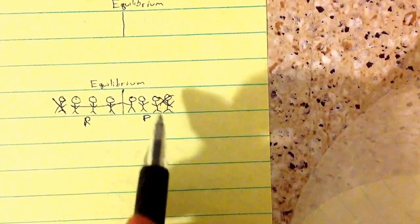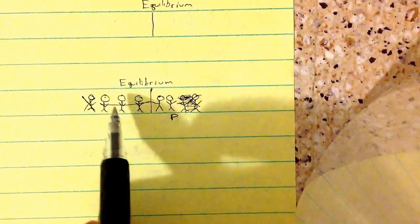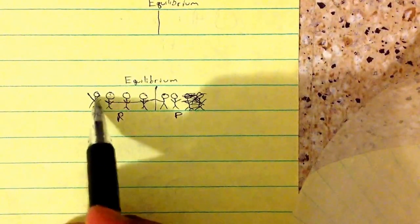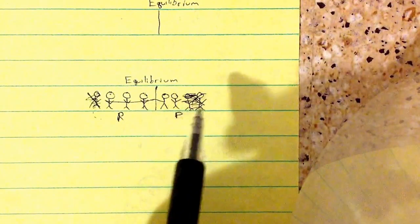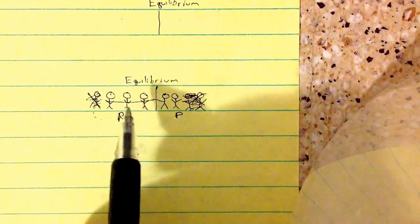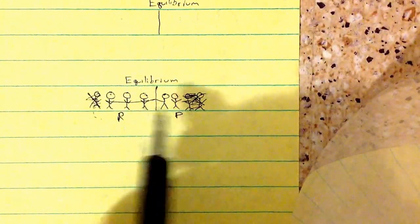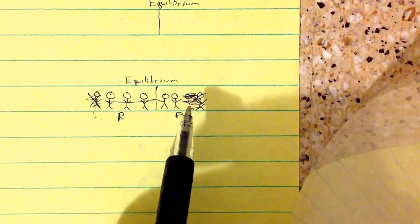If you get rid of one of the products, one of the product people, what happens? Now suddenly you have three people on the reactant side and two people on the products. So the reactant side is stronger, so they're going to push to the right. And the equilibrium is going to shift to the right.